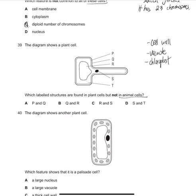So P is cell membrane, which the animal cells also have. Q is cell wall, R is vacuole, S is nucleus, and T is cytoplasm.